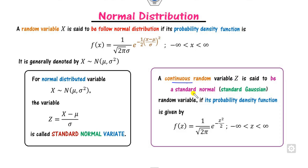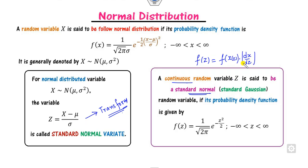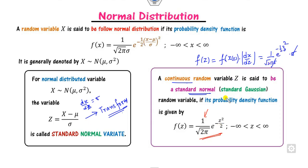A continuous random variable z is said to be a standard normal variant as shown here. This is based on the transformation method. After the transformation, sigma and sigma cancel out, and we get the PDF as (1 / sqrt(2π)) * e^(−z²/2), which is the PDF of the standard normal distribution.